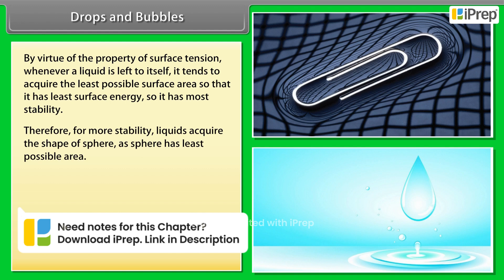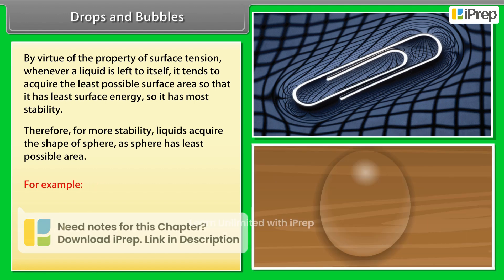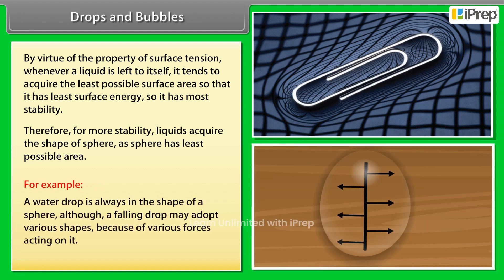Therefore, for more stability, liquids acquire the shape of a sphere, as sphere has least possible area. For example, a water drop is always in the shape of a sphere, although a falling drop may adopt various shapes because of various forces acting on it.